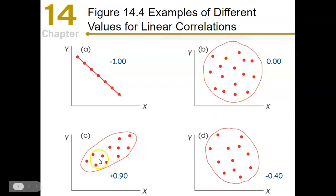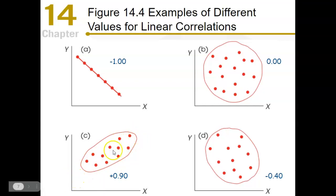In diagram C, we have a positive correlation close to being perfect — you can clearly see a linear pattern sloping upward, corresponding to about 0.9. In diagram D, we have a negative correlation that's not very consistent, around negative 0.4.